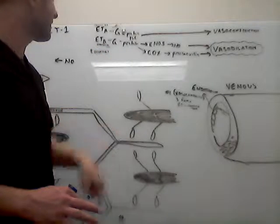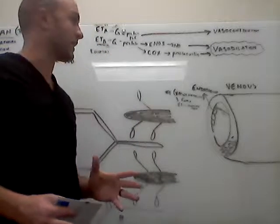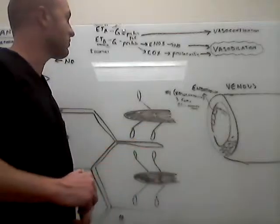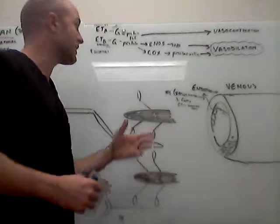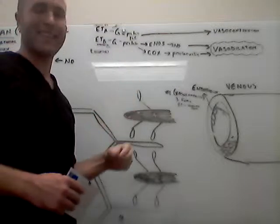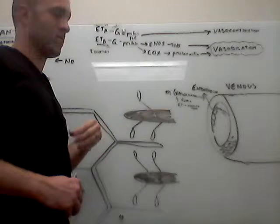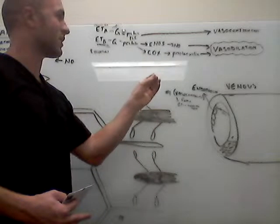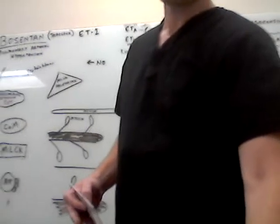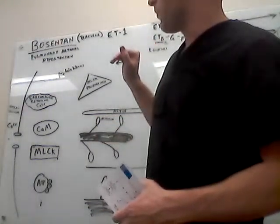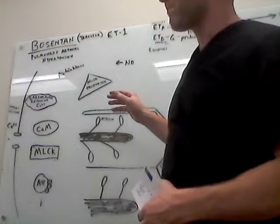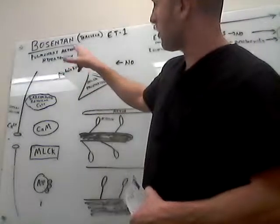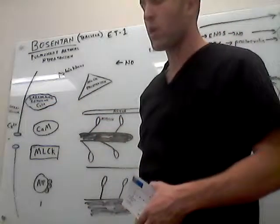However, ETB does pretty much the exact opposite. ETB receptors, when endothelin 1 binds to an ETB receptor, these are located on the endothelial cells. They work with G-coupled proteins and phospholipase C, and it ends up releasing ENOS. ENOS ultimately results in nitric oxide being released in the cell. Nitric oxide is going to ultimately interact with cyclic GMP-specific protein kinases that are going to activate myosin light chain phosphatase and also prevent the release of calcium from the sarcoplasmic reticulum.